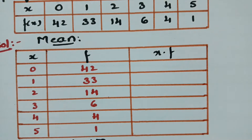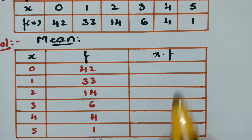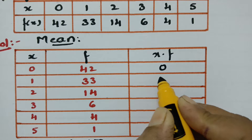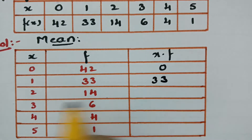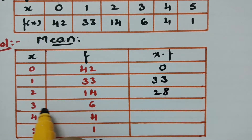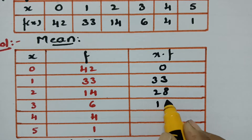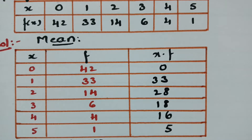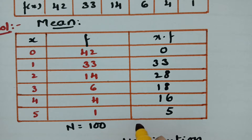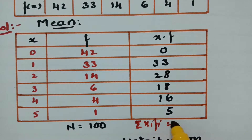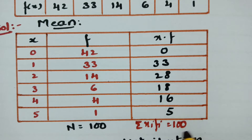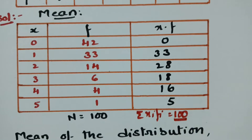First of all, I have to get the value of x multiplied by frequency, that is x into f. That is: 0 into 42 is 0; 1 into 33 is 33; 2 into 14 is 28; 3 into 6 is 18; 4 into 4 is 16; 5 into 1 is 5. So if I add up all these values, the sigma xi·fi value is equal to 100.